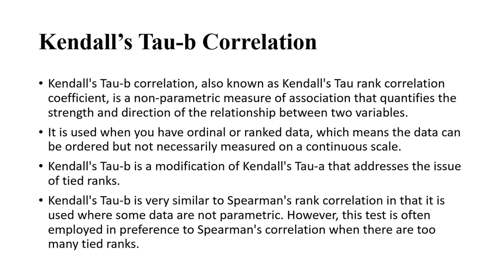Kendall's Tau B is a modification of Kendall's Tau A and addresses the issue of tied ranks. It is very similar to Spearman's rank correlation in that it is used where data are not parametric. However, this test is often preferred over Spearman's correlation when there are too many tied ranks in small data.